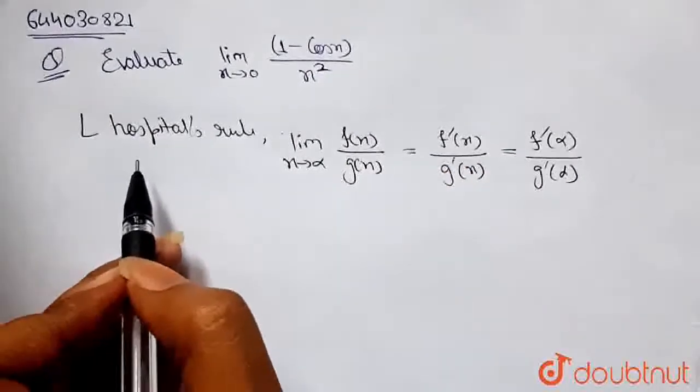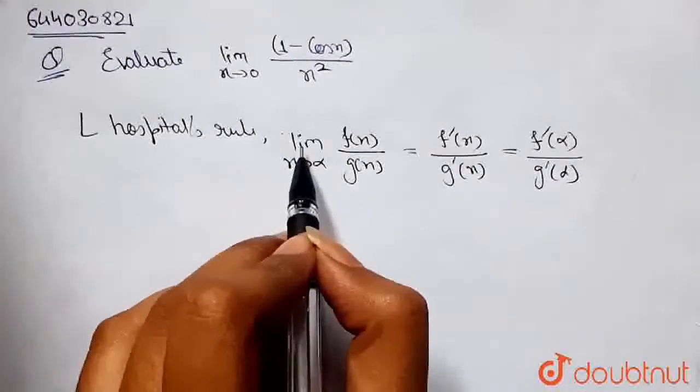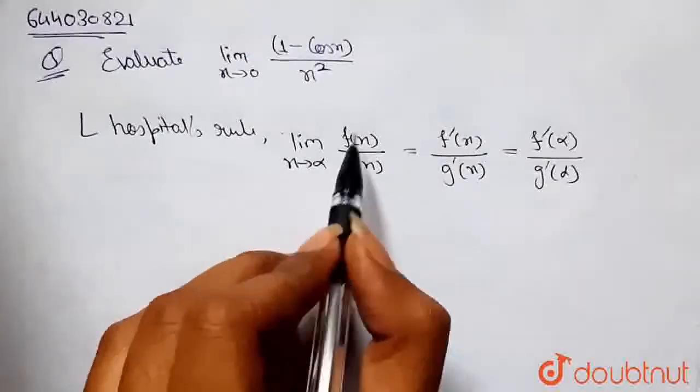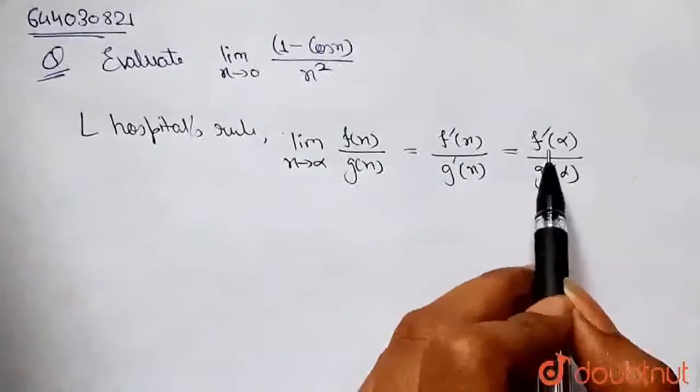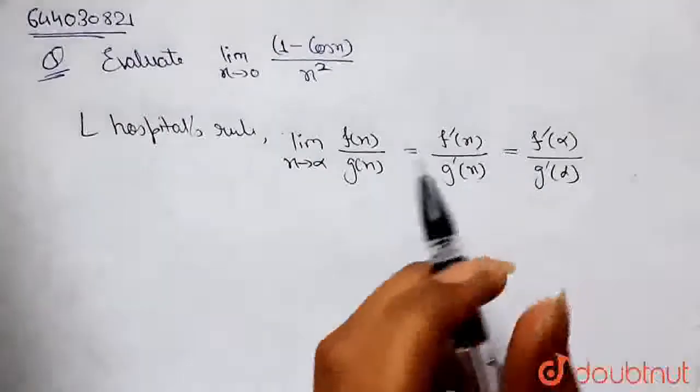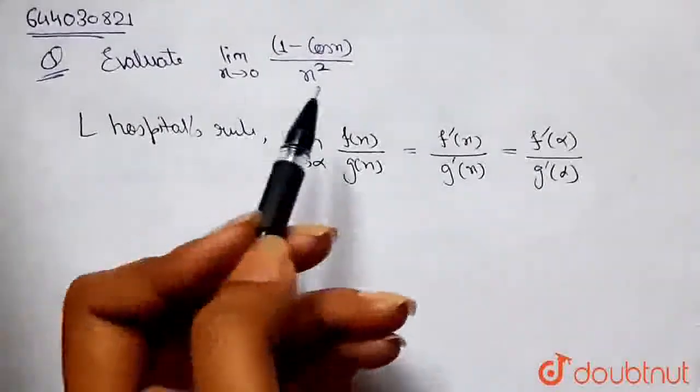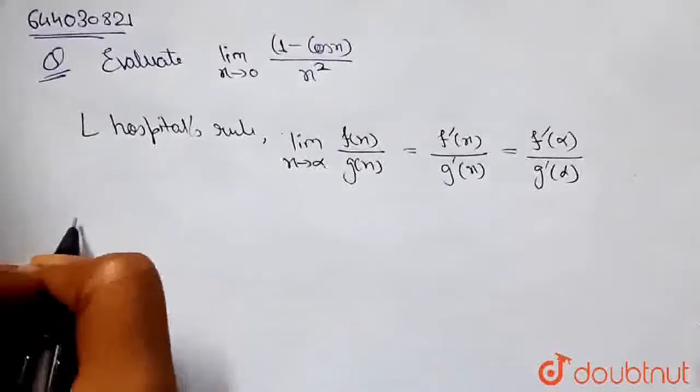So according to L'Hospital's rule, if we have limit x tending to alpha of one function divided by another function, then its limit will be f'(α) divided by g'(α). This rule we are going to use here. Let's start.